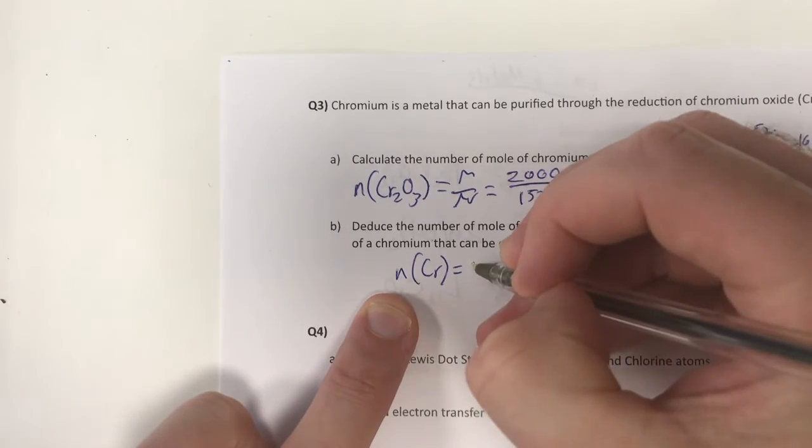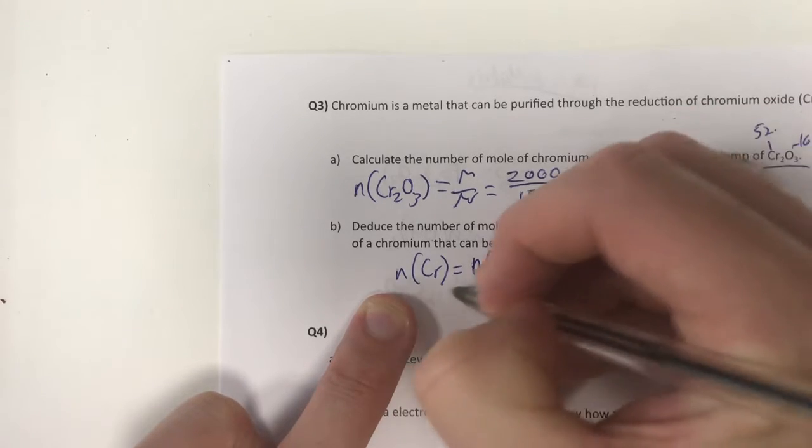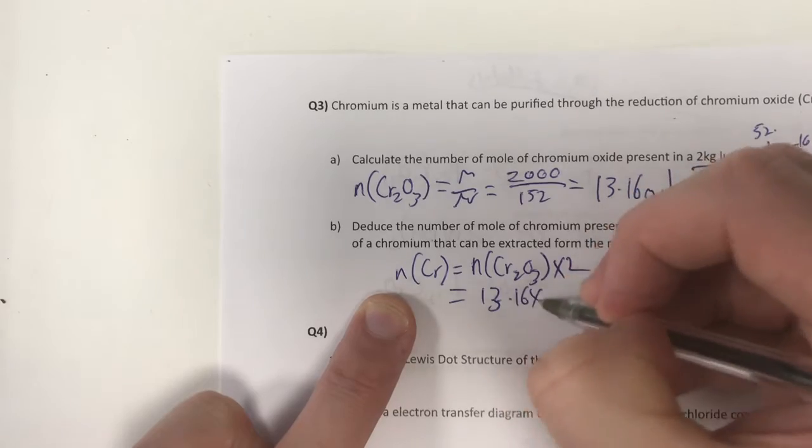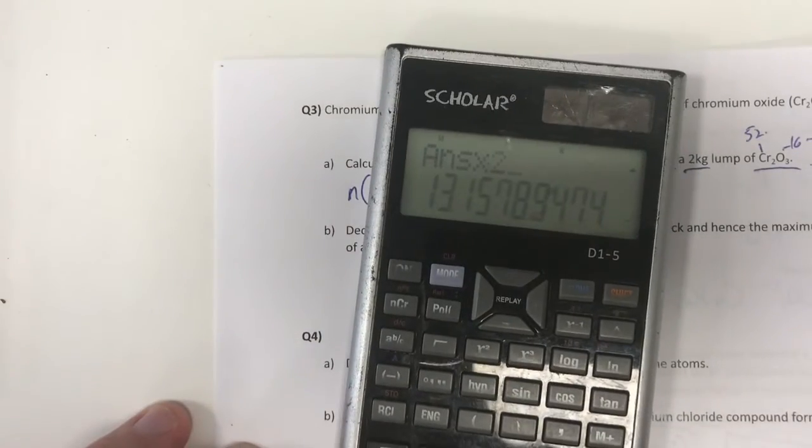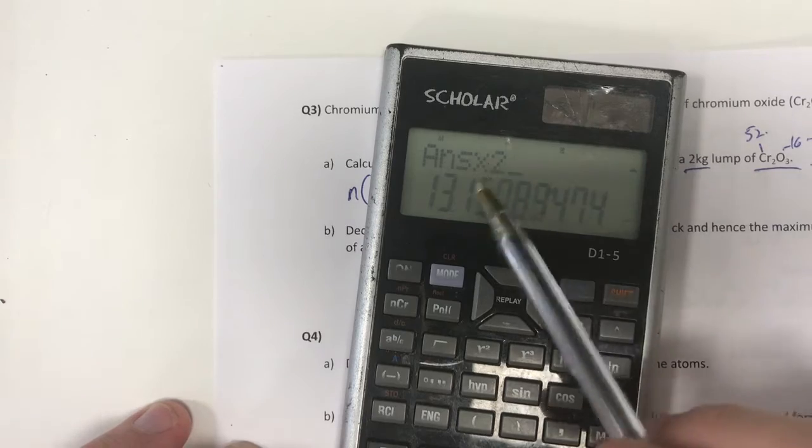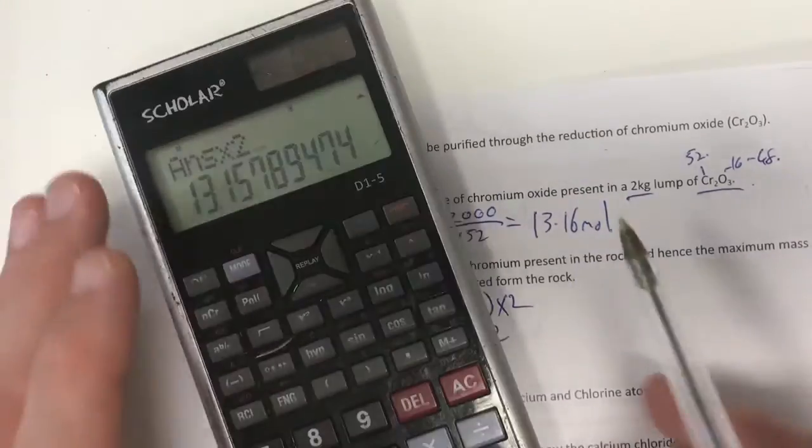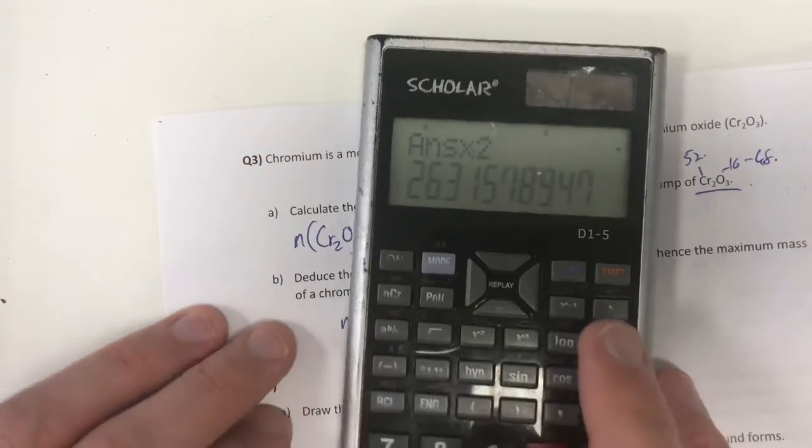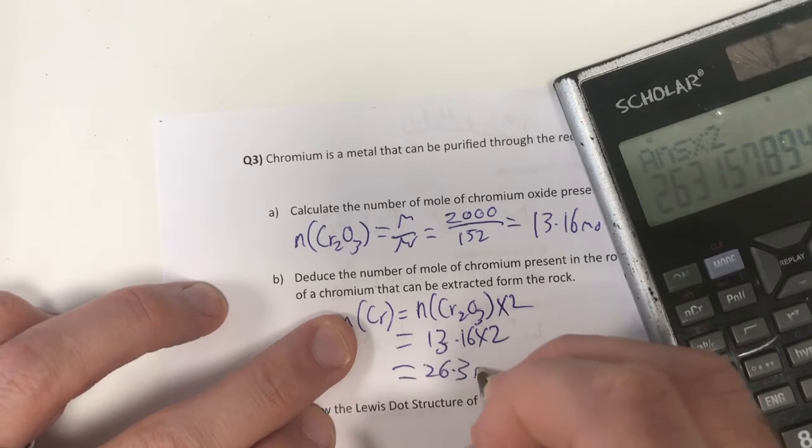So it's going to be number of moles of Cr2O3 times by 2, which is 13.16 times 2. Taking out my trusty calculator, take my answer and times it by 2. Notice I didn't clear my answer because I knew I would have to use it somewhere else here. That answer gives me 26.3 mole.